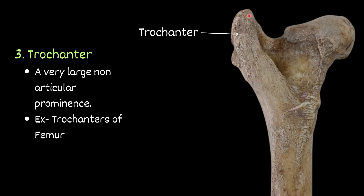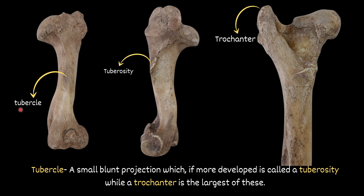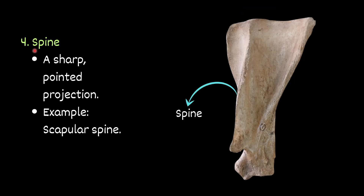Now a comparison between tubercle, tuberosity, and trochanter. Tubercle is a small blunt projection. If it is more developed, it is called a tuberosity. The largest of this type is trochanter. So: tubercle is a small blunt projection; if more developed, it is called tuberosity; while trochanter is the largest of these. Then spine — a sharp pointed projection, for example the spine of the scapula.